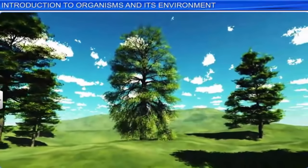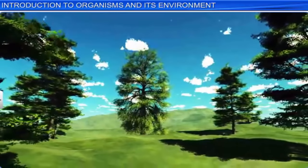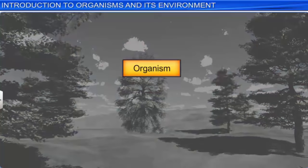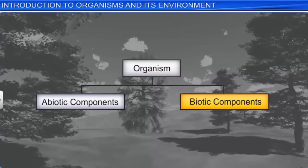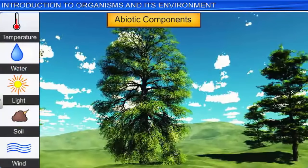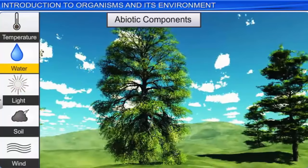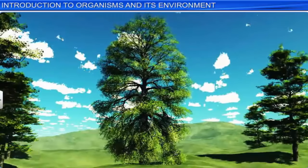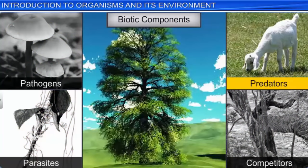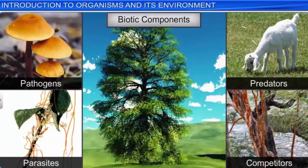When you look at this tree, you may think it is growing independently. However, the reality is that no living organism, including this tree, can grow in isolation. Every organism is surrounded by a host of abiotic and biotic components of the environment with which it continuously interacts. For example, this tree is influenced by a number of abiotic components such as temperature, water, light, soil, and wind, to name only a few. On the other hand, different biotic components such as pathogens, parasites, predators, and competitors of this tree also play an important role in its survival.